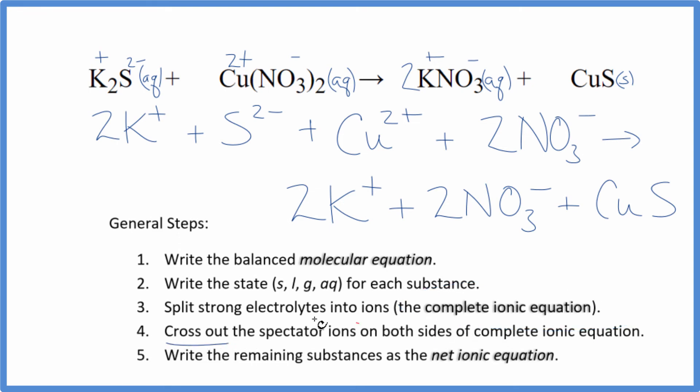Now we can cross out spectator ions. They're on both sides of the complete ionic equation. When I look at the reactants here, I see two potassium ions. I also see it here in the products. Cross that out. Two nitrate ions in the products. Two nitrate ions. So those can go.